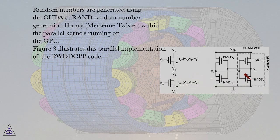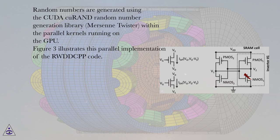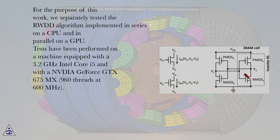Figure 3 illustrates this parallel implementation of the RWDD CPP code. For the purpose of this work, we separately tested the RWDD algorithm implemented in series on a CPU and in parallel on a GPU.